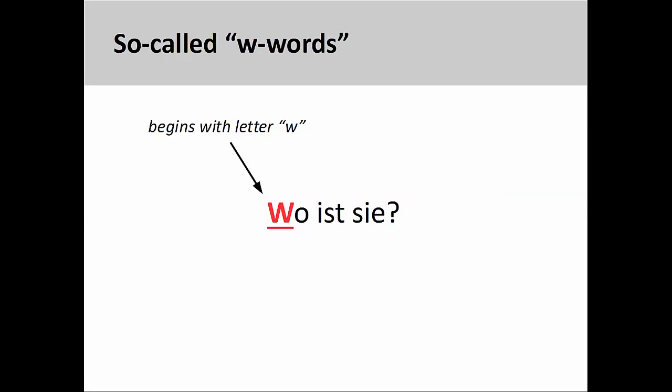Finally, as is the case with most English interrogative words, it is useful to note that German interrogative words begin with the letter W. For this reason, they are often called W words, in German, we Wörter.